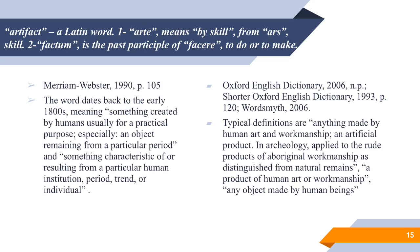Most definitions focus on the quality of artifacts as objects and remains rather than process or production. Typical definitions include anything made by human art and workmanship, a product of human art or workmanship, and any object made by human beings. The words we use for different kinds of artifacts are shaped by our history in using them. When we speak of interfaces, for example, we think of human-computer interaction and not shoes or cups — despite the fact that shoes and cups are interfaces of a kind. When we speak of products and process, we generally do not think of things digital, but a software package is as much a product as a block of cheese.